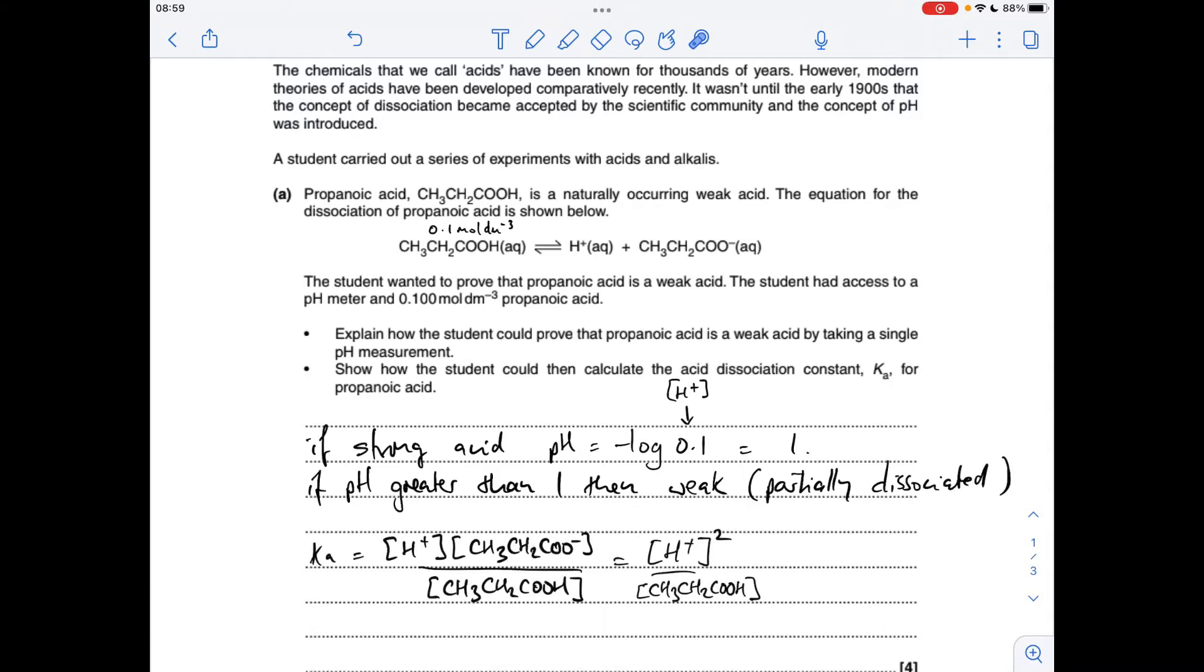Second bullet point now, how could the student then calculate the acid dissociation constant for propanoic acid? I've already written up the Ka expression and then simplified it, remember these are the same. So how do we get the H+ concentration? It's 10 to the minus pH. So Ka is going to be 10 to the minus pH squared over the concentration of the acid, which was 0.1.